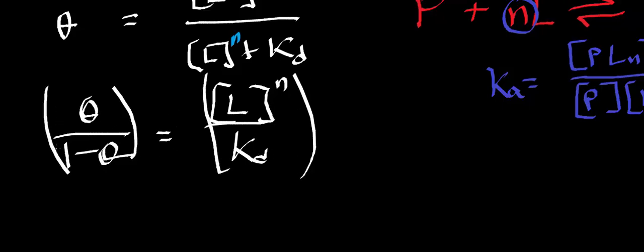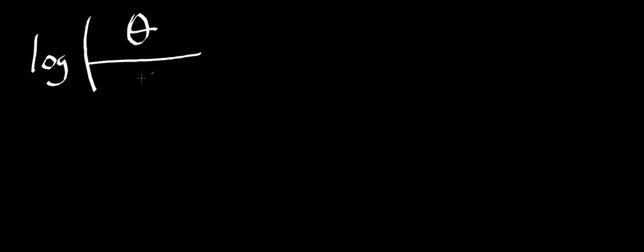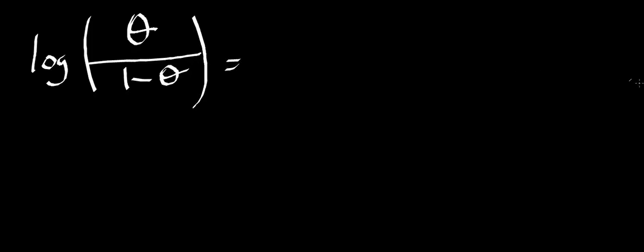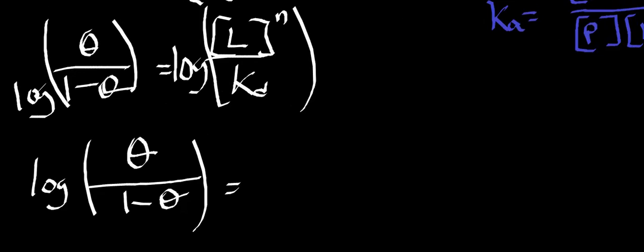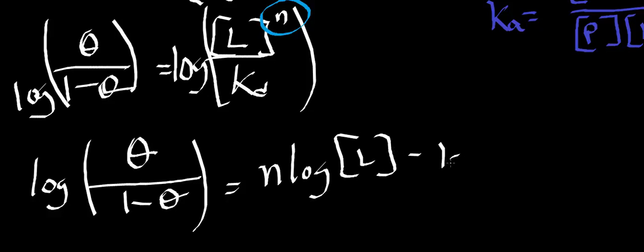We're going to take the log base 10 of both sides. We get the log of theta divided by 1 minus theta equal to — recall that when you have an exponent and take the log of that term, you can bring the exponent down in front of the log. And when taking the log of a quotient, it becomes the difference of the two logarithms. So you get N times the log of the ligand concentration minus the log of the dissociation constant KD.